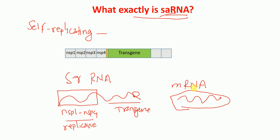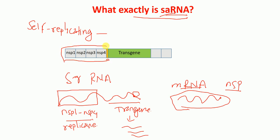Whereas in self-replicating RNA, we also include non-structural protein sequences — sequences encoding for the non-structural proteins from alpha viruses — to form the replicase or the replication machinery. When inside the cell, this replicates our transgene. One example: we have non-structural protein sequences encoding for NSP1, 2, 3, 4, a promoter sequence, and our transgene sequence — our gene of interest.